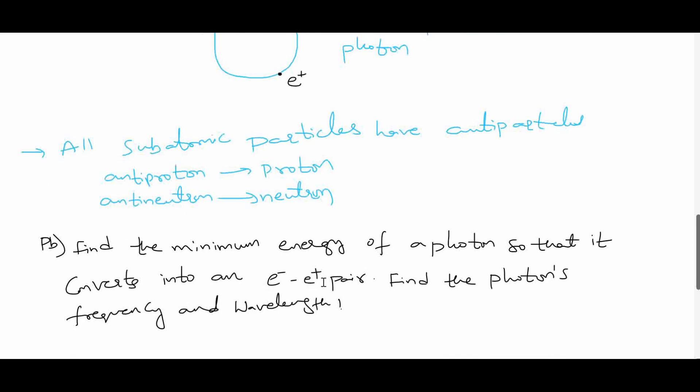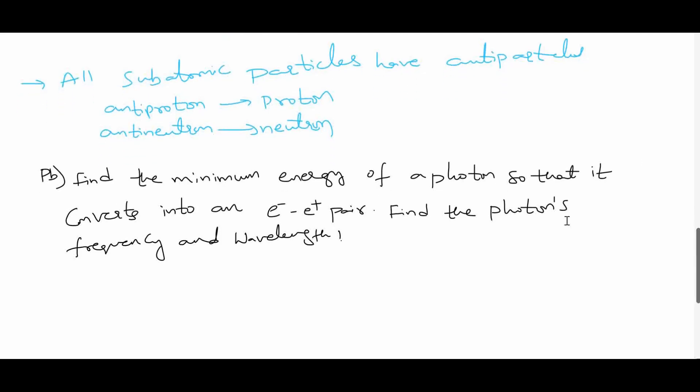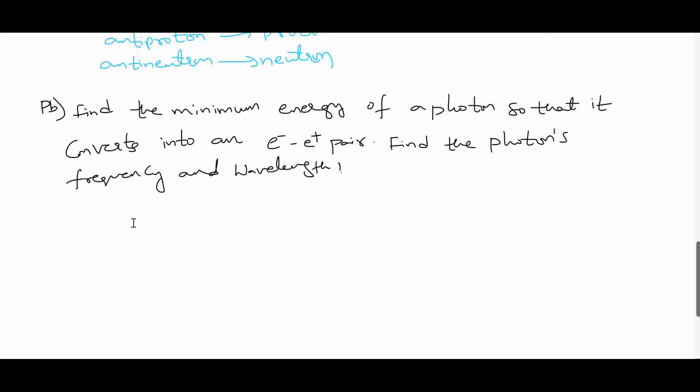For example, in order to produce an electron and positron pair, what would be the minimum energy of photon so that we get that pair? Also find the frequency and the wavelength. We have seen that h nu is approximately equal to two times rest mass energy of electron plus kinetic energy of electron plus kinetic energy of positron.